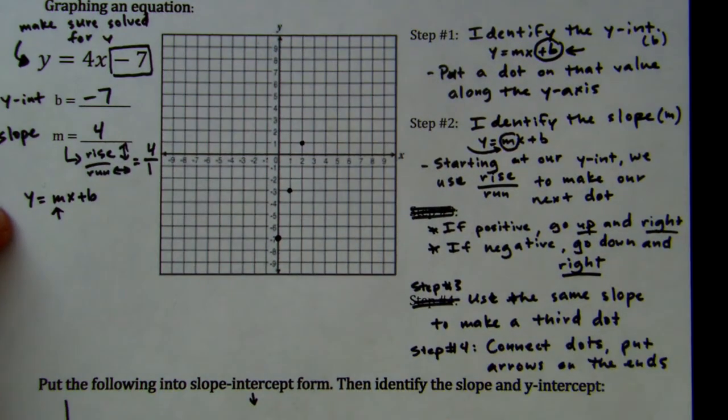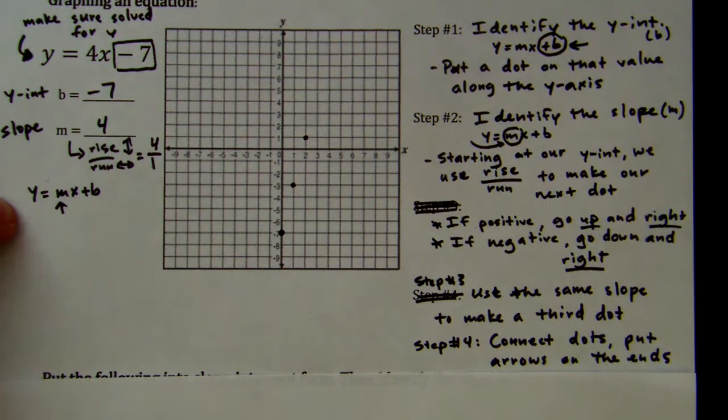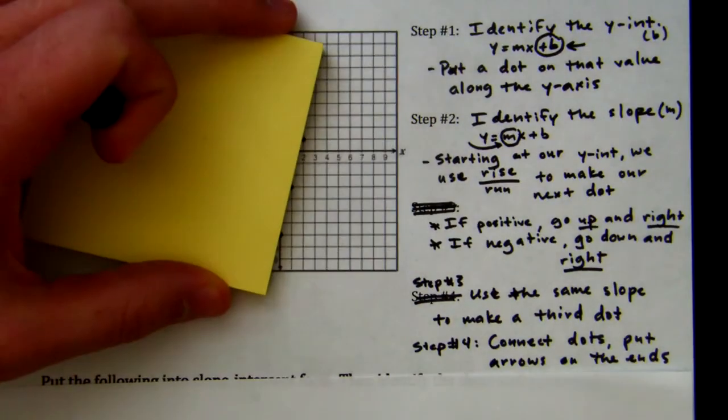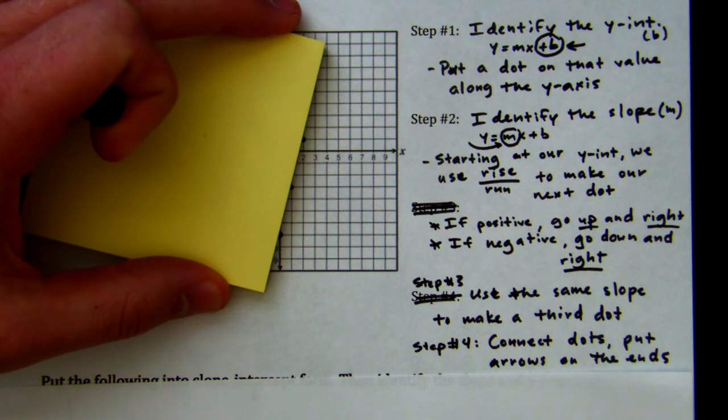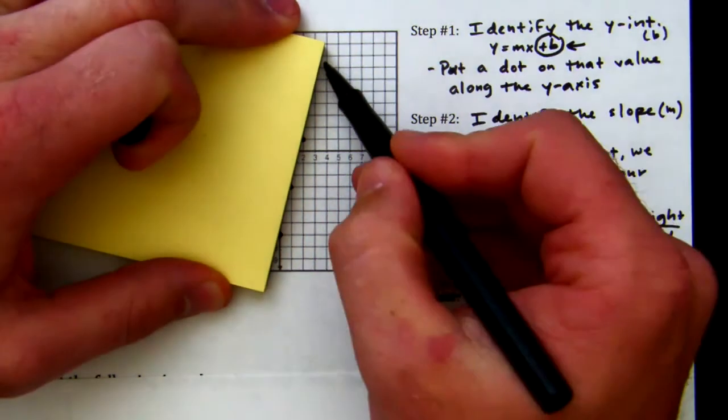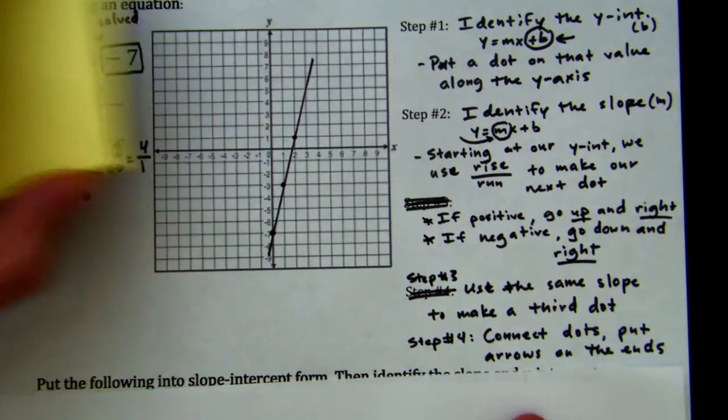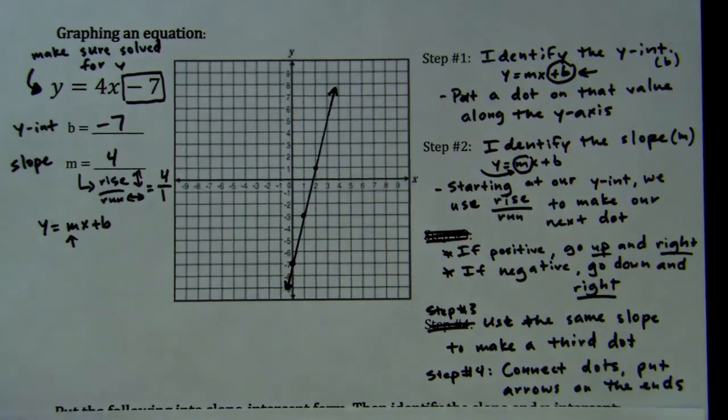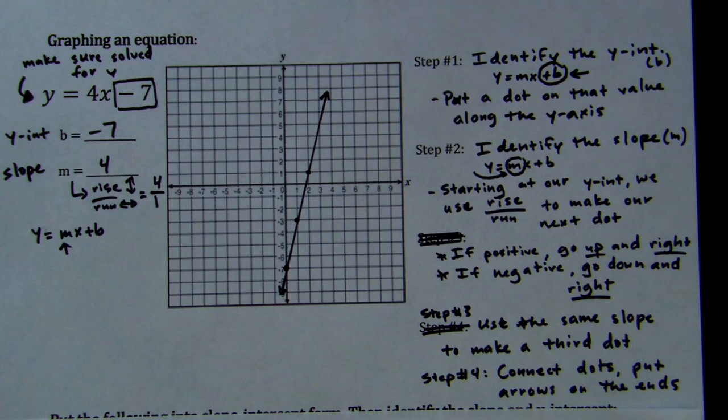And then our last step here is we connect the dots, and we put arrows at the end. And I know you guys don't have a piece of paper in front of you, but we're just going to go like this. I'm going to take my handy-dandy, fancy straight edge. I'm going to connect the three dots, and then I'm going to put arrows on the end, and that's it. So, we identify our y-intercept, we graph it, then we use our slope to make two more points. Rewind that if you need to.